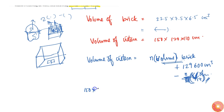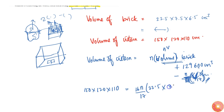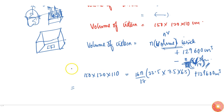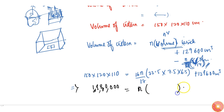Substituting values: 150 × 120 × 110 equals n × 22.5 × 7.5 × 6.5 × (16/17) plus 1,29,600 cm³. After simplification, the coefficient of n works out to approximately 1032.353, and the left-hand side gives 19,80,000 cm³.